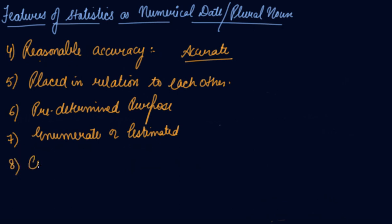Eighth is collected in a systematic manner. Statistics should be collected in a systematic manner. Before collecting them, a plan must be prepared. No conclusion can be drawn from statistics collected in haphazard manner. So whenever you are collecting any statistics, it should not be in a very fast manner. You should collect the data properly in a systematic manner. So these are some of the features of your statistics in a plural noun.